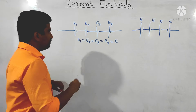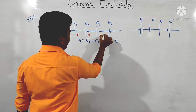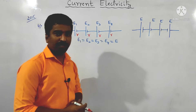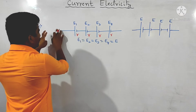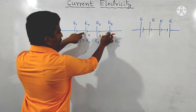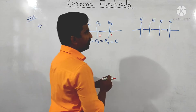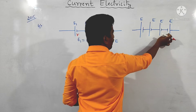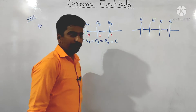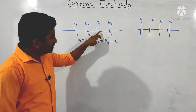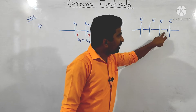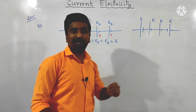All 4 cells have the same EMF value e and the same internal resistance r. If one of the cells is connected wrongly — meaning negative connected to negative and positive to positive — this is a wrongly connected series combination.